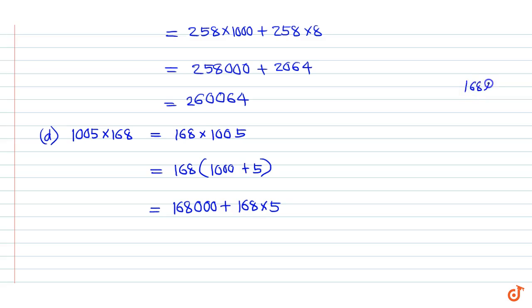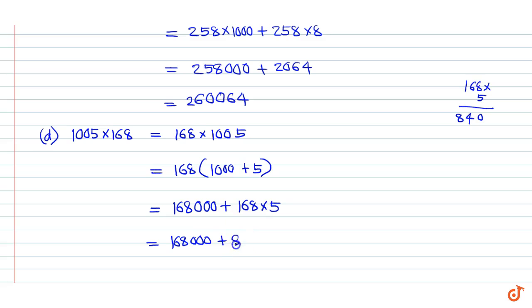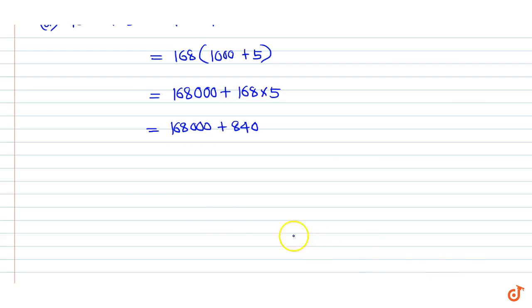168 into 5 is equal to 840. This is equal to 168000 plus 840, giving the final result.